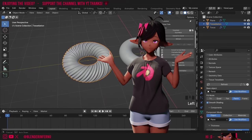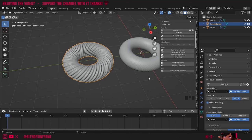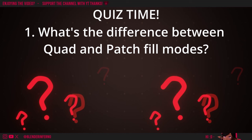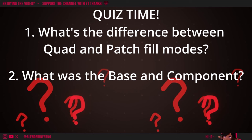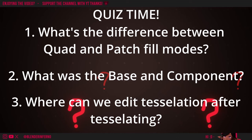Great, well done for creating your own swirl — that's today's lesson over. In the next lesson we're going to be setting up the scene so we're ready to start animating. Also if you have any questions about today's lesson feel free to let me know in the comment section below. Now we're going to have a quick quiz to cover what we learned today. Number one: what is the difference between the Quad fill mode and the Patch fill mode? Number two: in our project what was the component and what was the base? Number three: which menu did we edit our tessellation settings in?